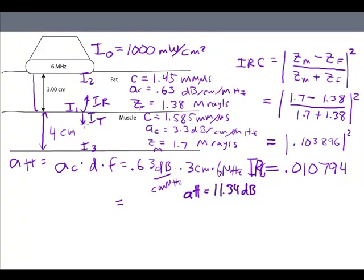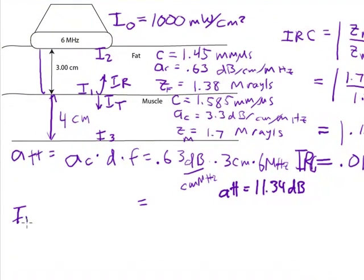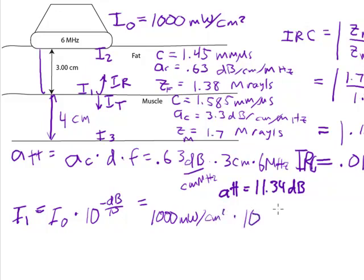And so, if I started out with 1,000, my intensity at point number one is equal to the initial intensity times 10 to the minus decibels over 10. 11.34 decibels. And so that comes out to be equal to 1,000 milliwatts per square centimeter times 10 to the, and this divided by 10 is negative 1.134. I'm going to make a note of that number because I'm going to be using it again later.